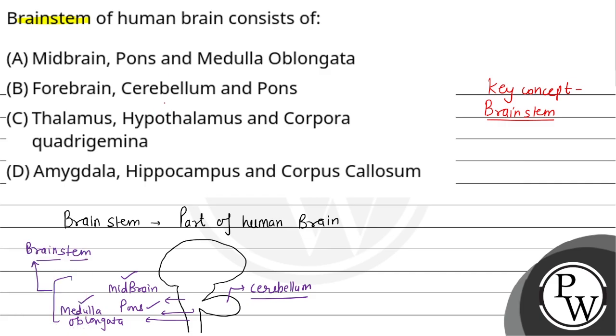Now let's evaluate the options. Midbrain, pons and medulla oblongata — this is given in Option A, so this is correct. Option B includes the forebrain, and the forebrain does not play a role in forming the brainstem, so Option B is incorrect.